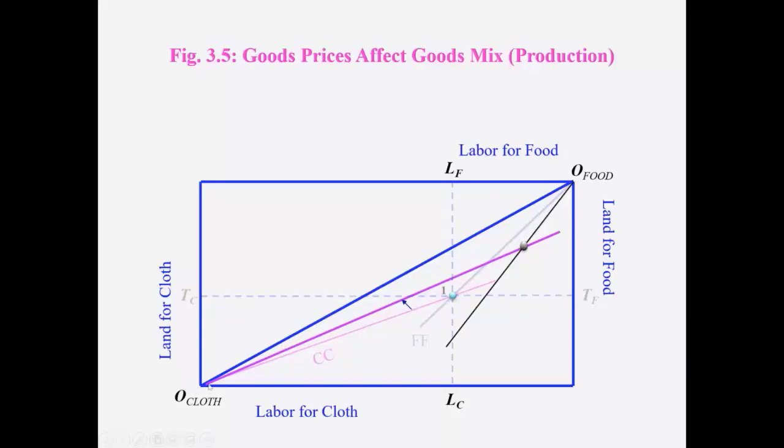So if we look at the distance between the origin of the cloth and the new equilibrium, we realize that more cloth has been produced because as you move away from this origin of cloth, more land and labor are being used.